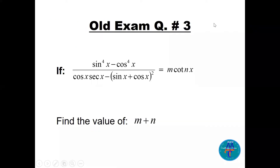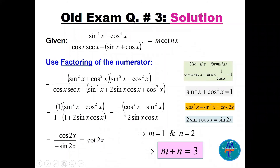Question number three: we have (sin⁴x − cos⁴x) divided by (cos(x)·sec(x) − (sin(x) + cos(x))²), and we need to show this equals m·cot(nx), then find m + n. In the numerator, factor as a difference of two squares: (sin²x + cos²x)(sin²x − cos²x) = 1·(sin²x − cos²x). In the denominator, cos(x)·sec(x) = 1, and (sin(x) + cos(x))² expands to sin²x + 2sin(x)cos(x) + cos²x = 1 + 2sin(x)cos(x).